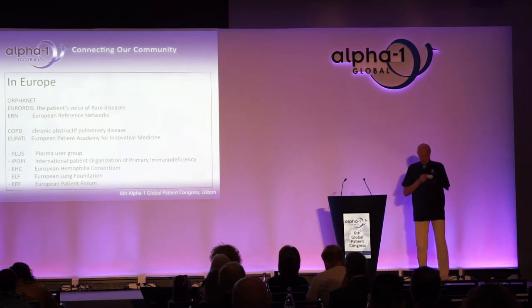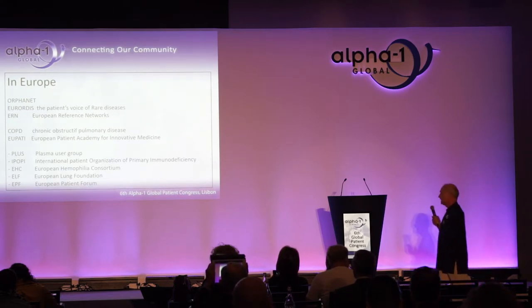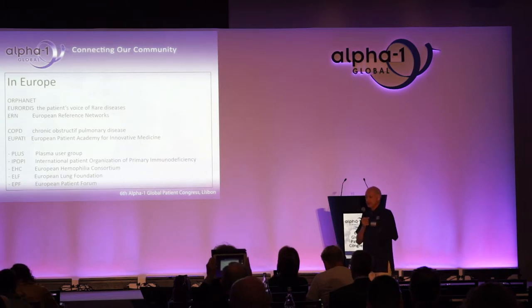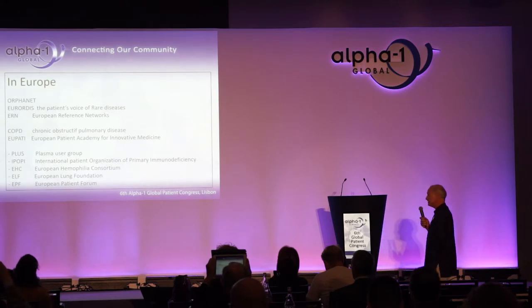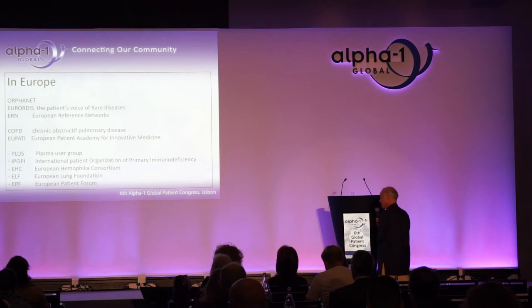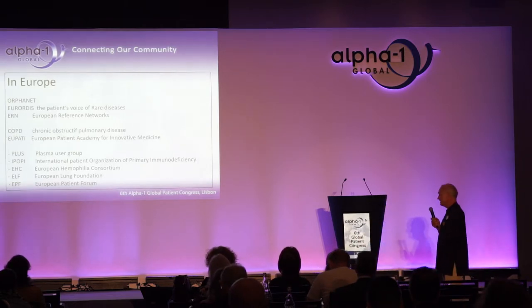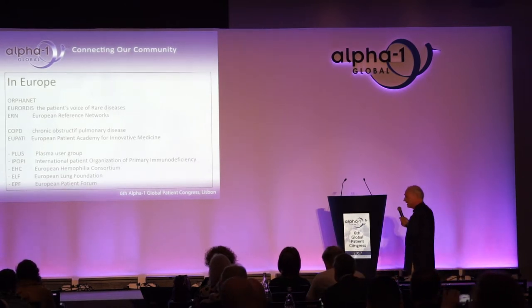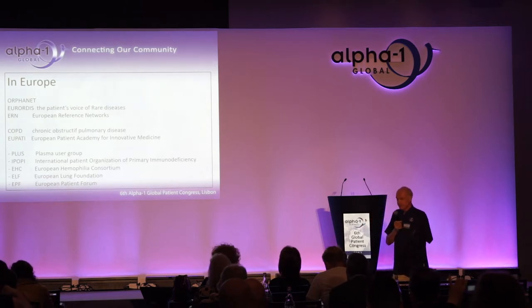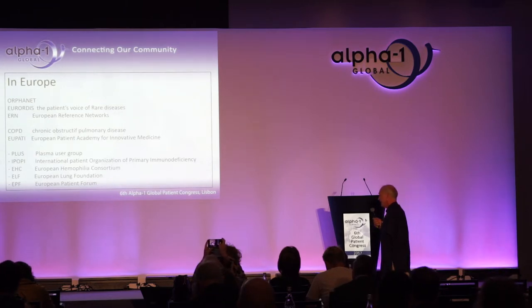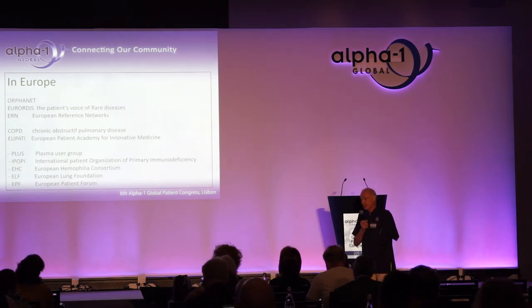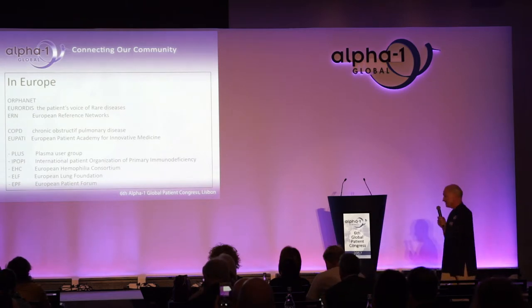In Europe, we have Orphanet—a registry about orphan diseases. We have EURODIS with the summer school, which is a training school for patients of rare diseases. We have the European Reference Network. COPD associations are very important because we find some Alpha-1 patients in there and they have similar treatment problems. EUPARTY is a European Patient Academy for Innovative Medicine, which is another umbrella structure. And then we have smaller groups like the Plasma User Group or IPOPI—the group of immunodeficiency patients, present in nearly every country. The European Hemophilia Consortium with hemophilia national groups—for Alpha-1s it's important to have contact with them to understand how the national health system works.